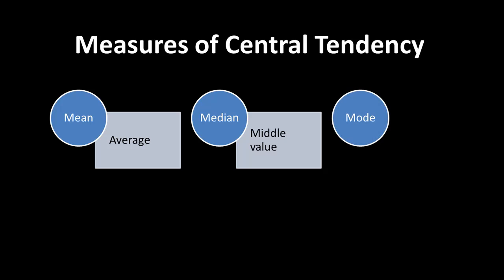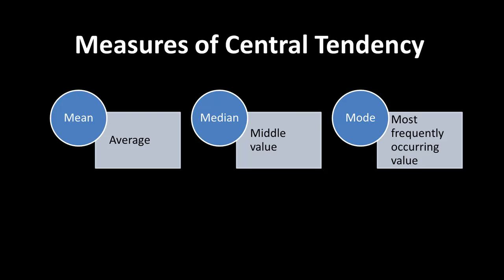Another value often used is the mode — simply the most frequently occurring value. This might also be important for considering a typical member of a group of data. So these are all different measures of central tendency.